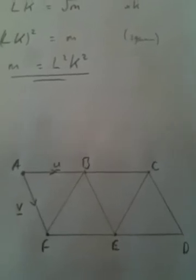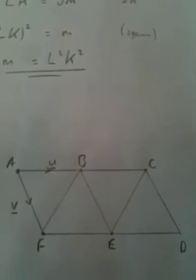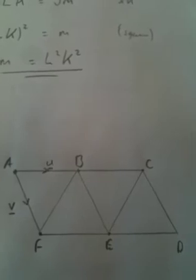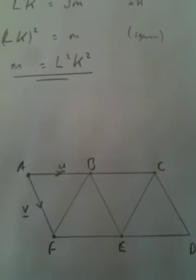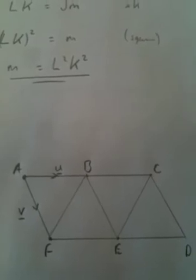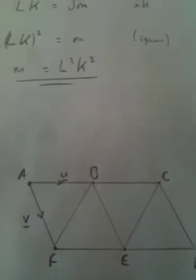On to number four, we have a vector question. From a to b is vector u, so from b to c, and f to e, and e to d will also be vector u. A to f is vector v, so b to e and c to d will also be vector v.